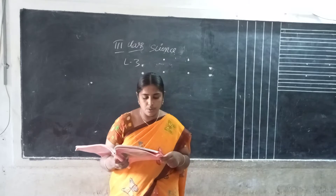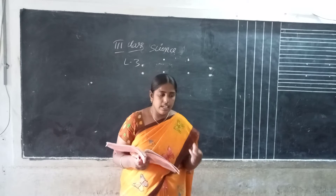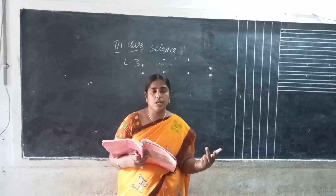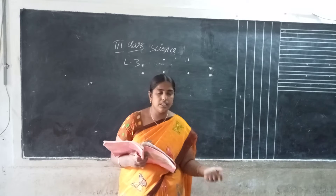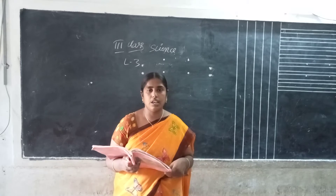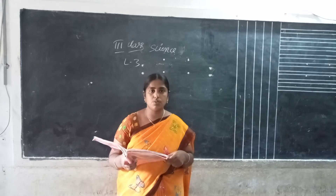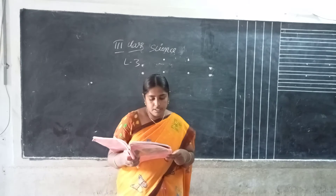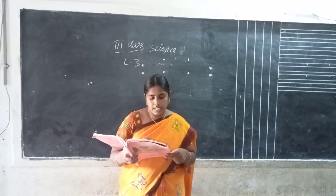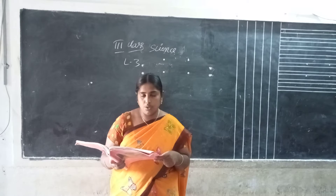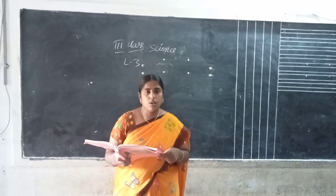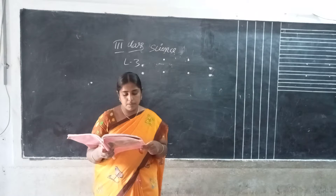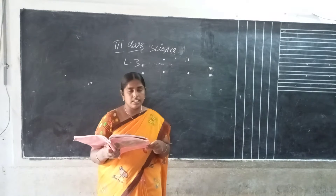Plants need both air and water. You can see that water can be used to get water into the soil. Plant roots need both air and water, but the plant gets blocked. Water needs more plants, and most plants do not grow well in clay soil.